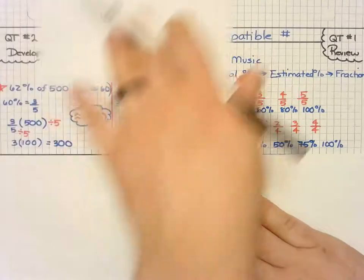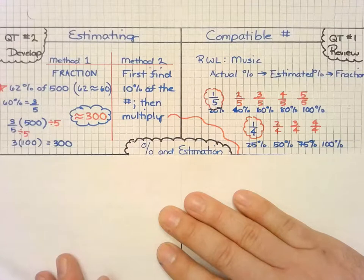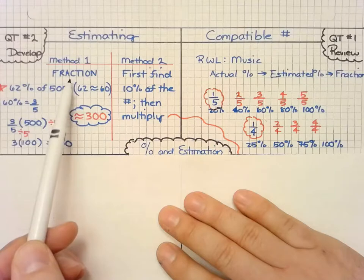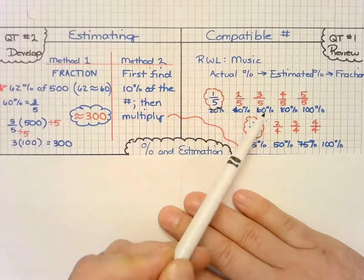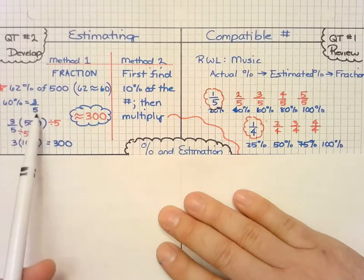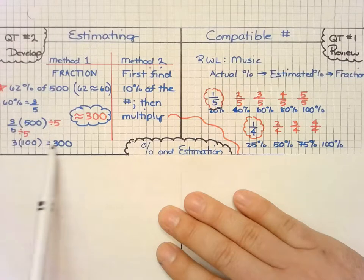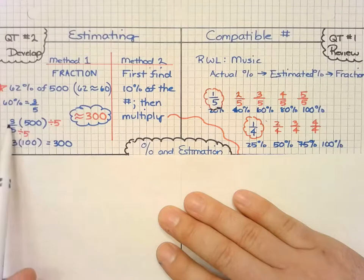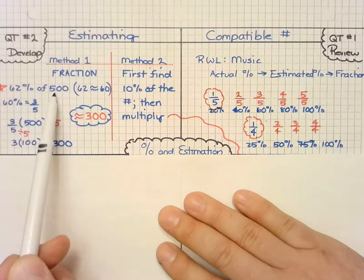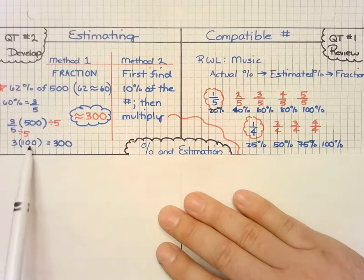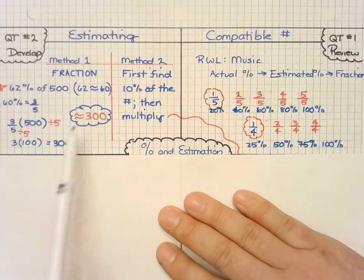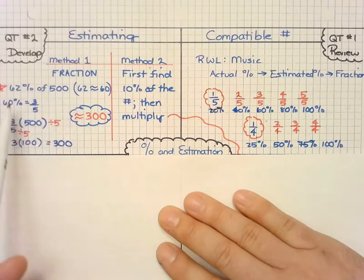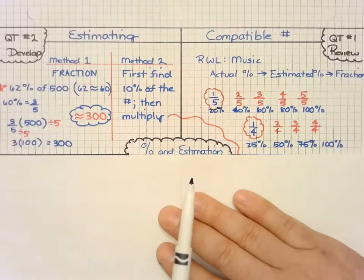We want to take that idea and apply it to estimating. There's two ways we could do this. Method one, using fraction method, in which we take those compatible numbers and use the fraction and multiply, and then simplify. So I have three-fifths, which is 60%, times that 500 is three times 100 is equal to 300. So it's approximately equal to 300, without actually having to worry about the details of the math.